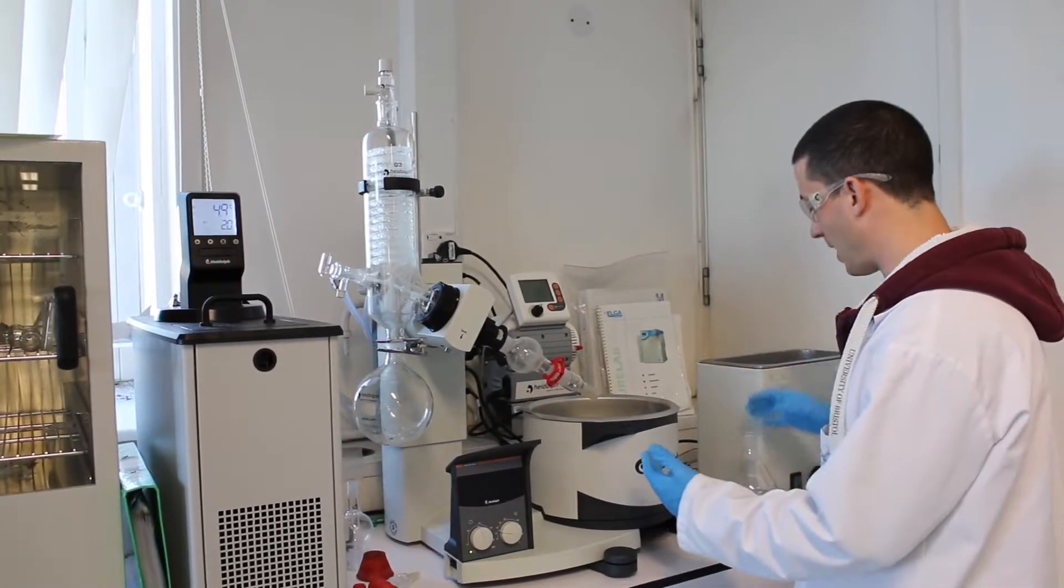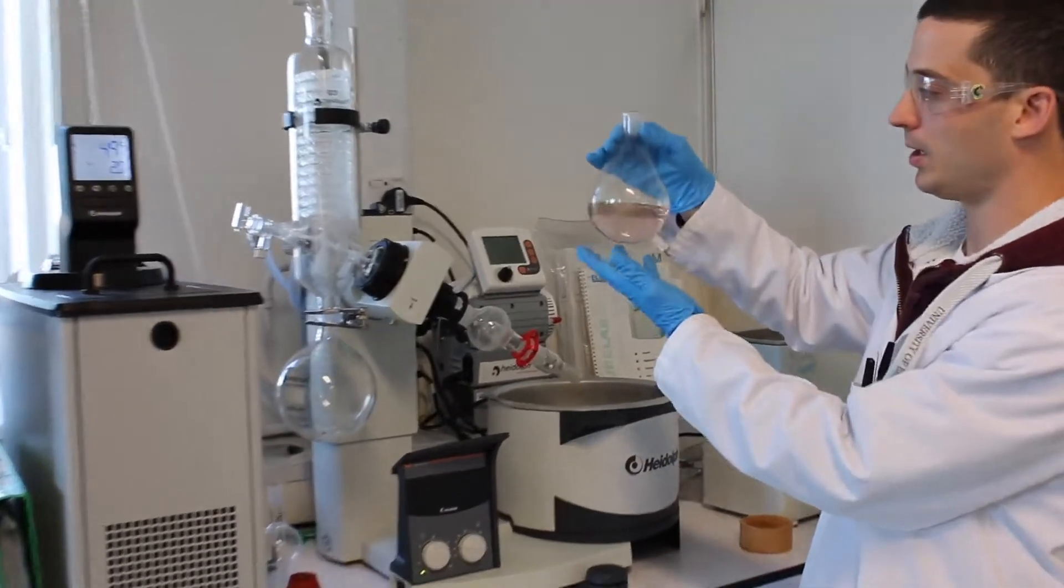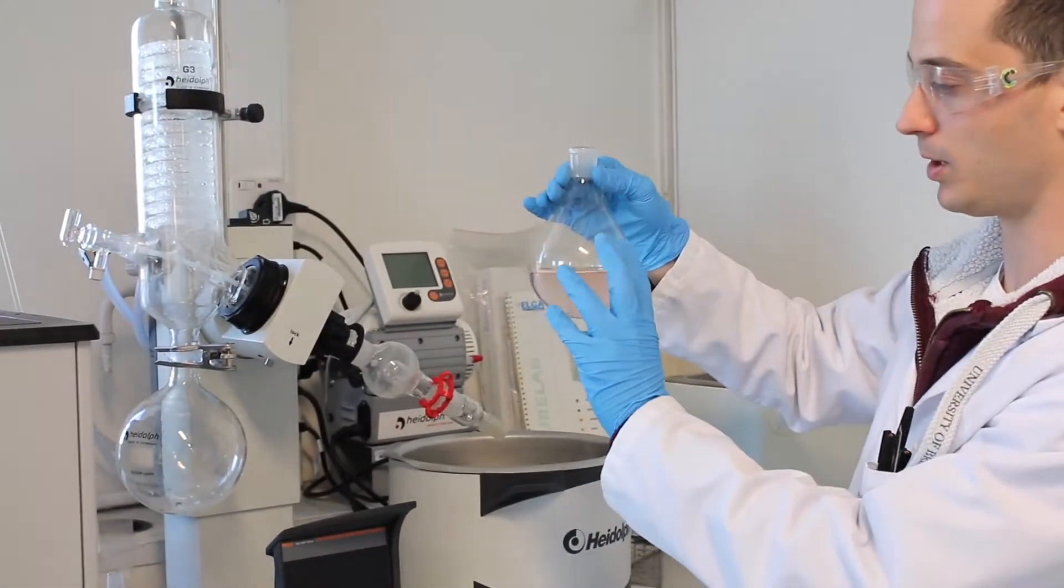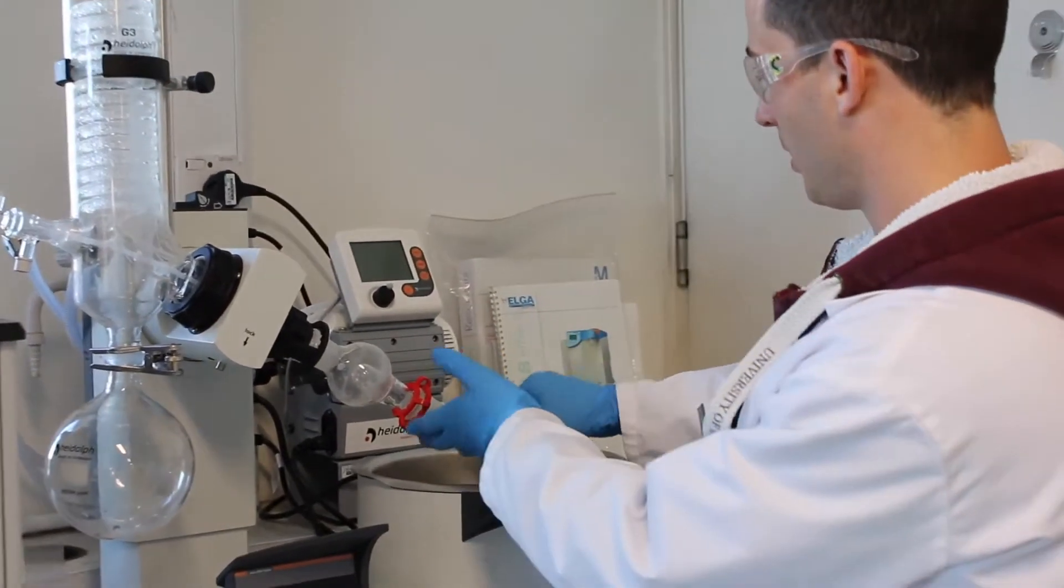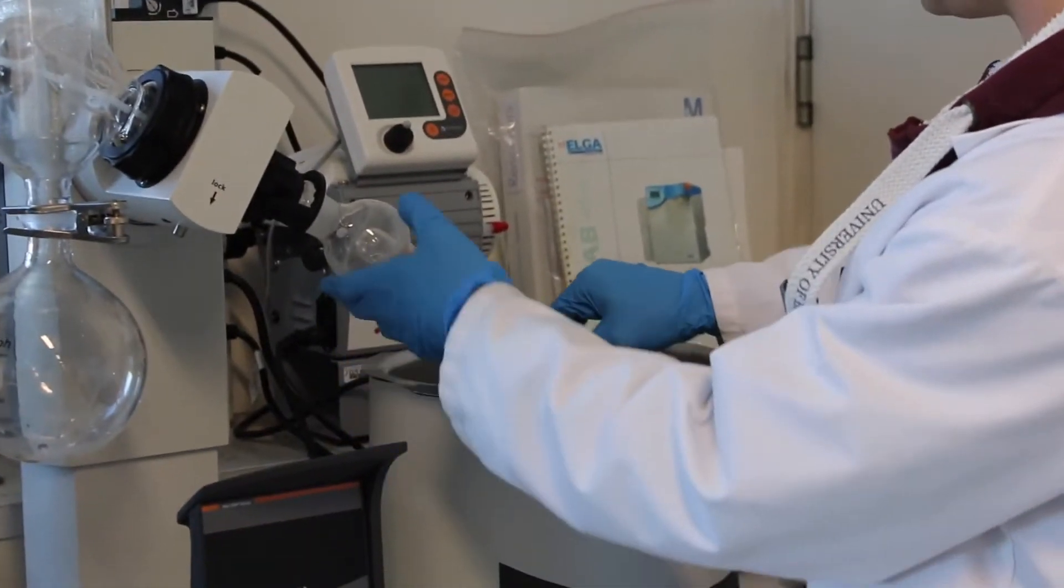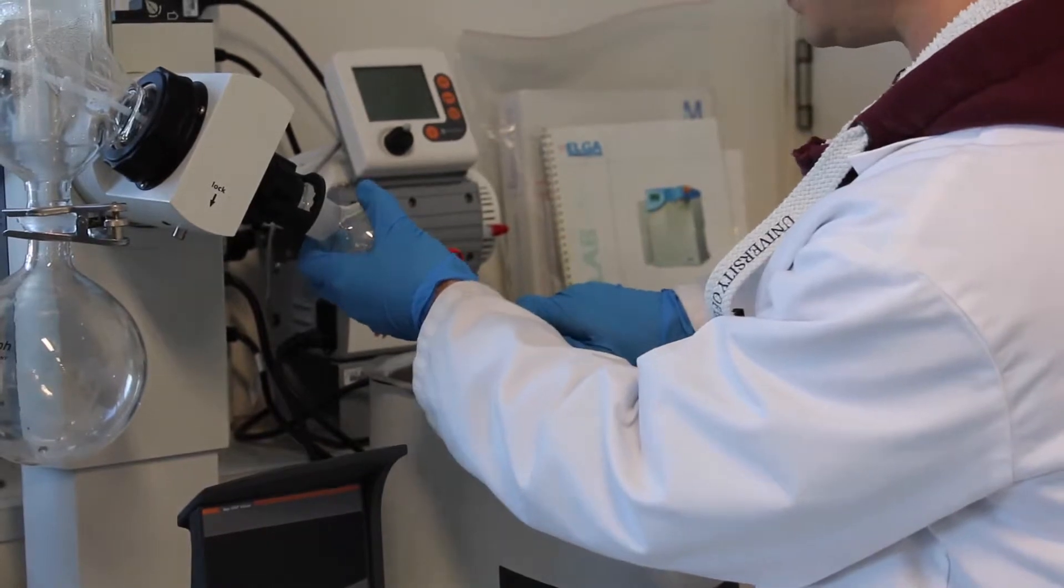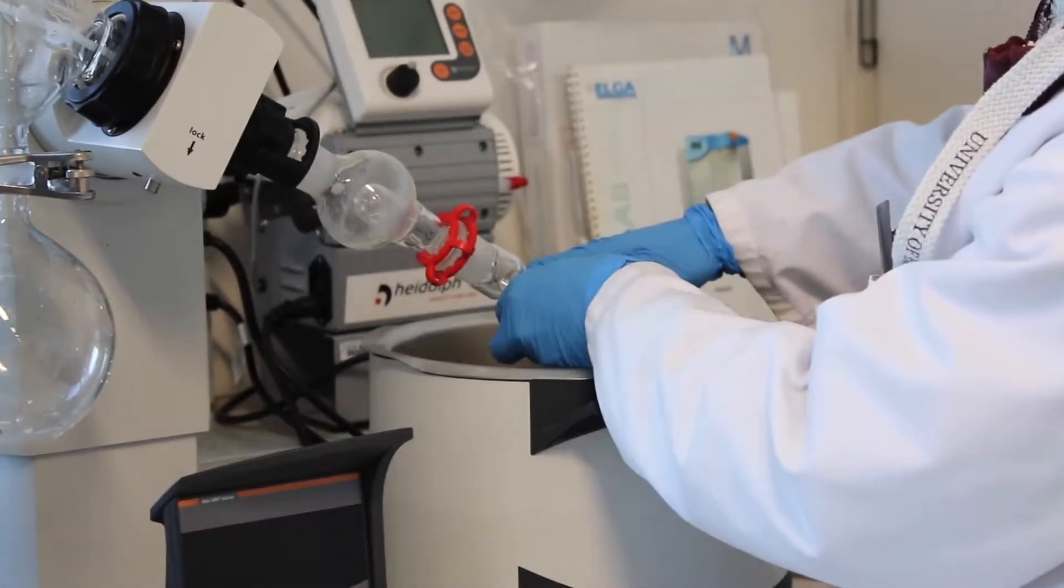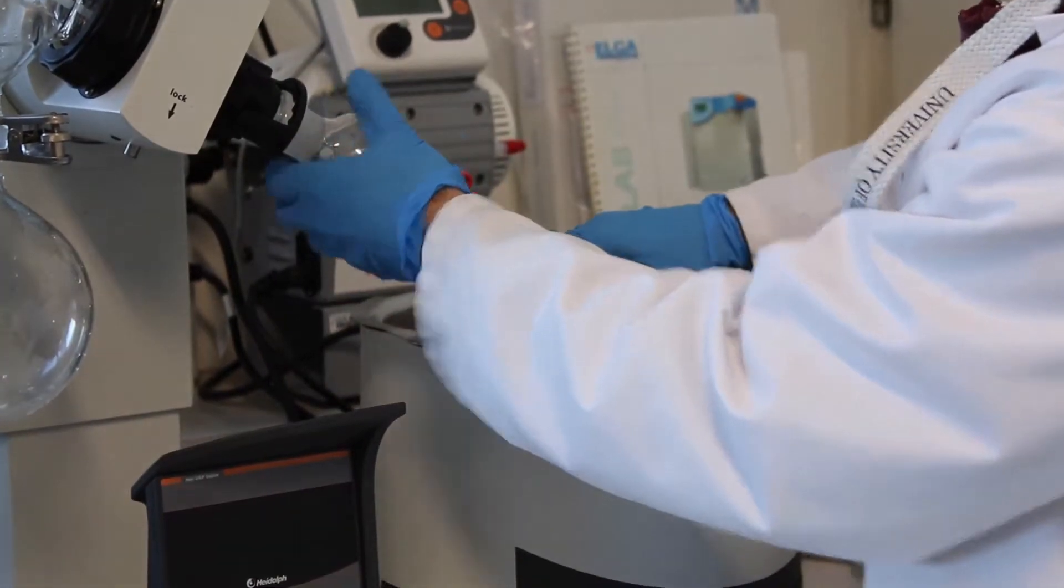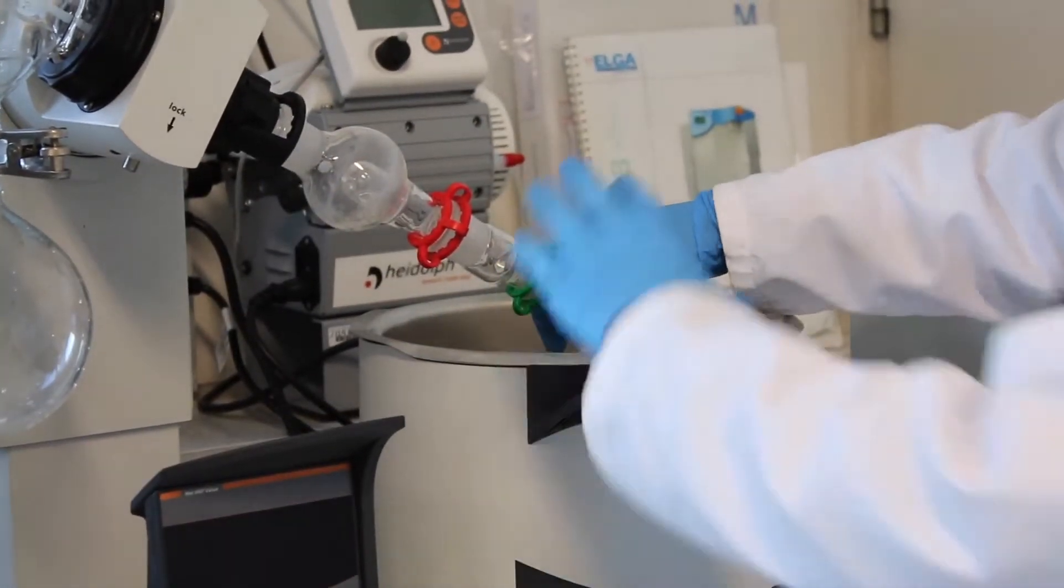In this case, now I'm going to attach our flask. So this contains water and we want to rotavap it off. So here we have our glass connector. You want to attach it here. Make sure it's nice and attached and use the clamps for safely holding it there.